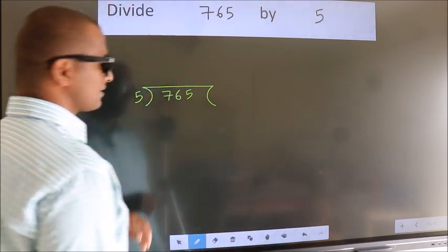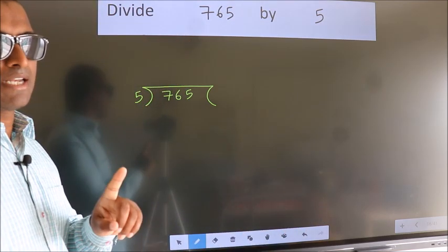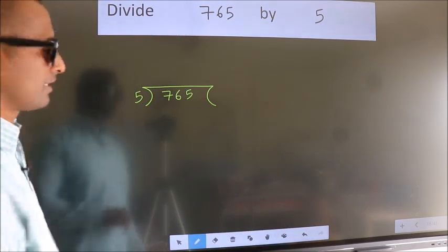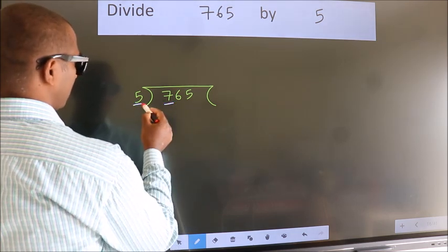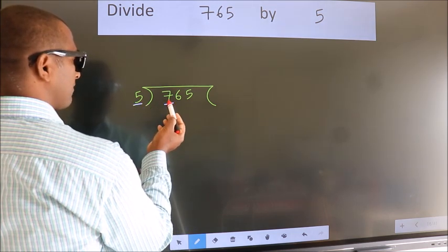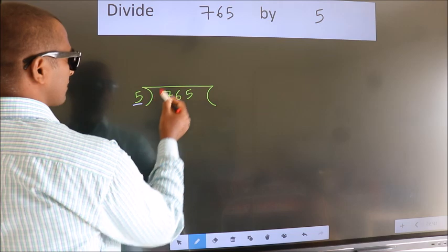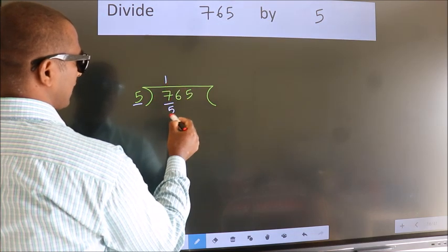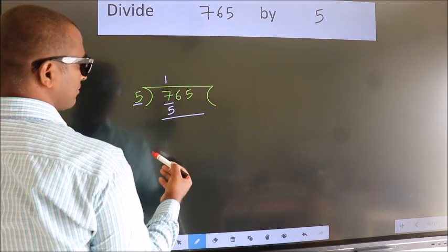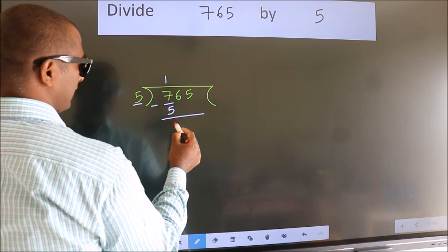This is your step 1. Next, here we have 7, here 5. A number close to 7 in the 5 table is 5 once, 5. Now, we should subtract. We get 2.